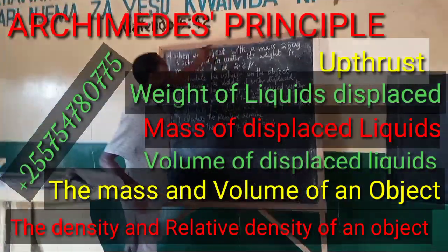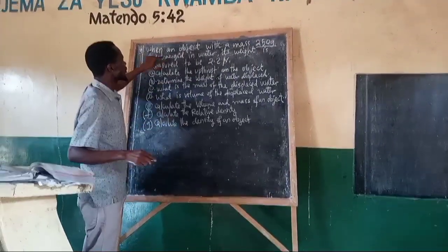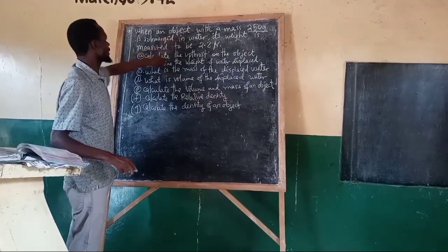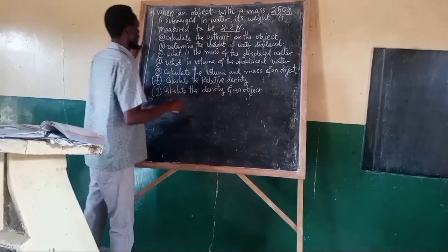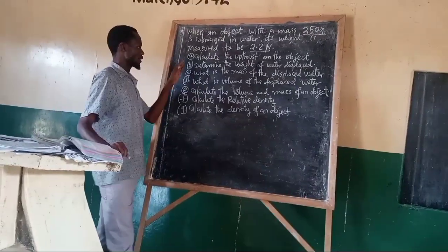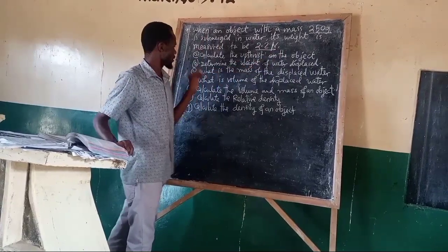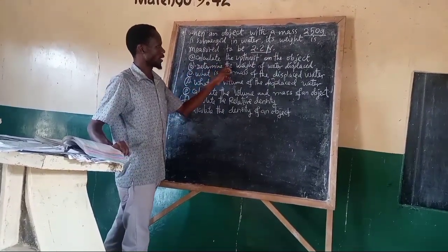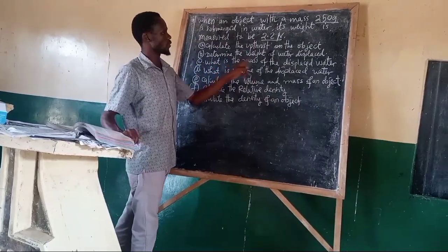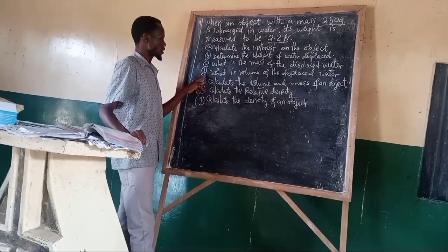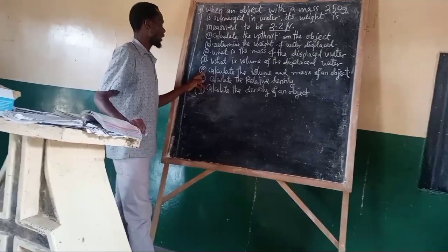When an object with a mass of 250 g is submerged in water and its weight was recorded to be 2.2 N. The questions are: 1. Calculate the uplift on the object. 2. Determine the weight of the water displaced. 3. What is the mass of the displaced water? 4. What is the volume of the displaced water?